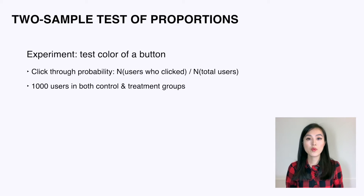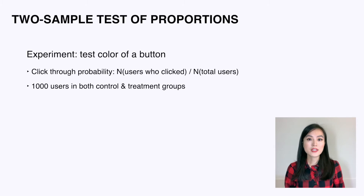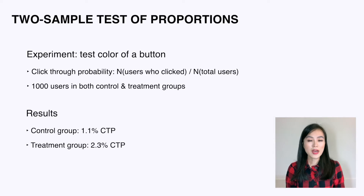Okay, let's get started. The first question is: we ran an experiment where we test the color of a button. The metric we're looking at is the click-through probability. It is calculated as the number of users who click the button over the total number of users. There are equal numbers of users in both control and treatment groups. The control group has 1.1% click-through probability while the treatment group has 2.3% click-through probability.